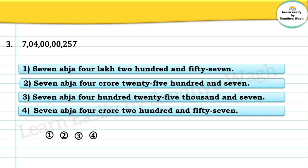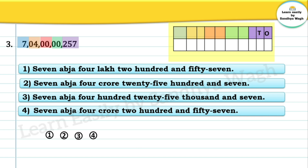The next number is 7040000257. This number has five periods: the units or ones period, thousands period, lakhs period, crores period, and abja period. The place values are: ones, tens, hundreds, thousands, ten thousands, lakh, ten lakh, crore, ten crore, and abja.